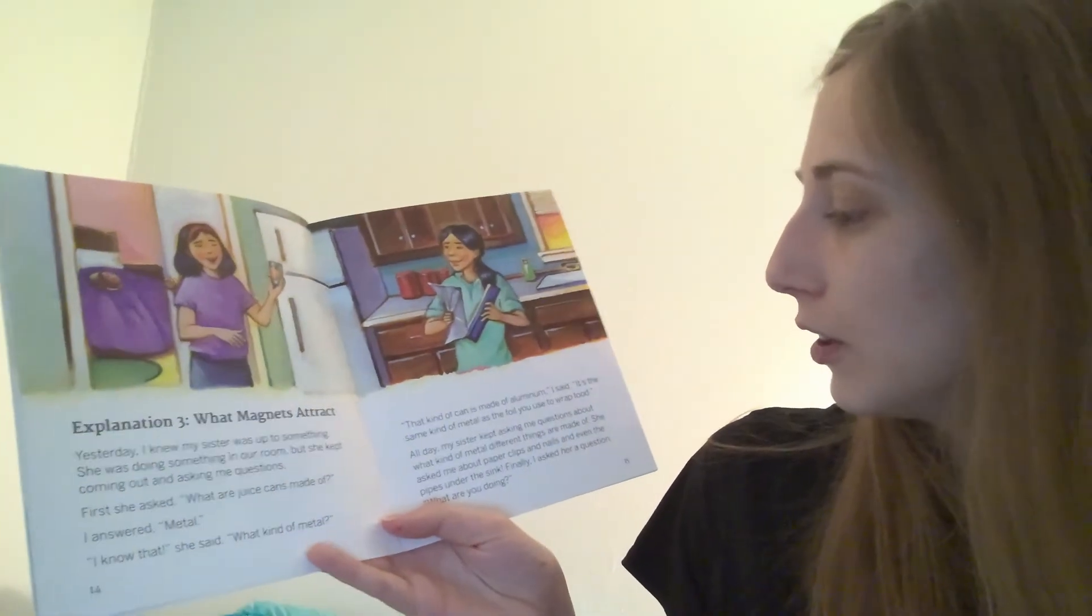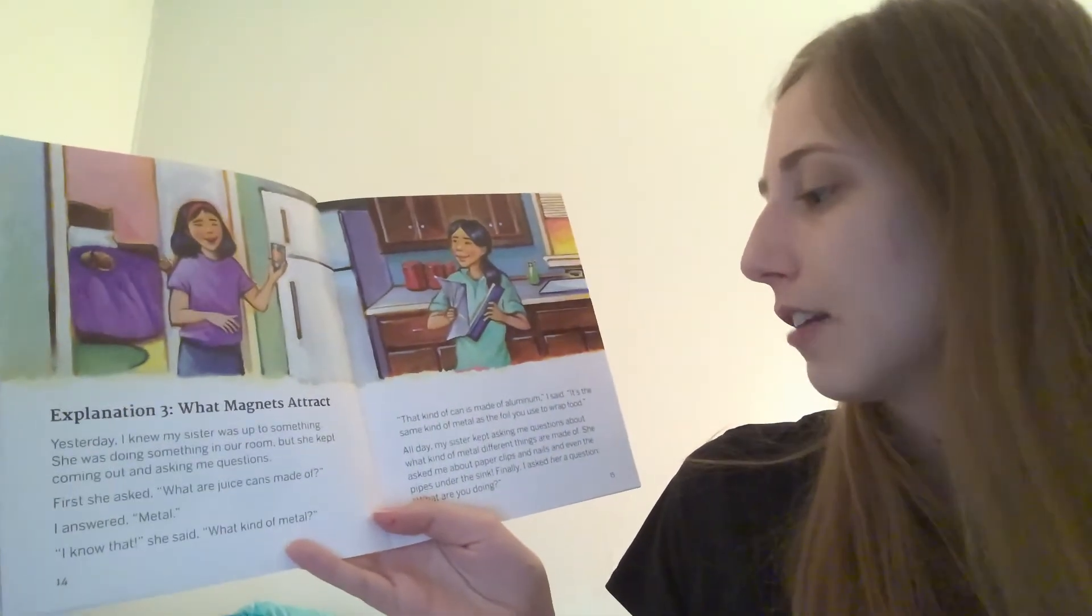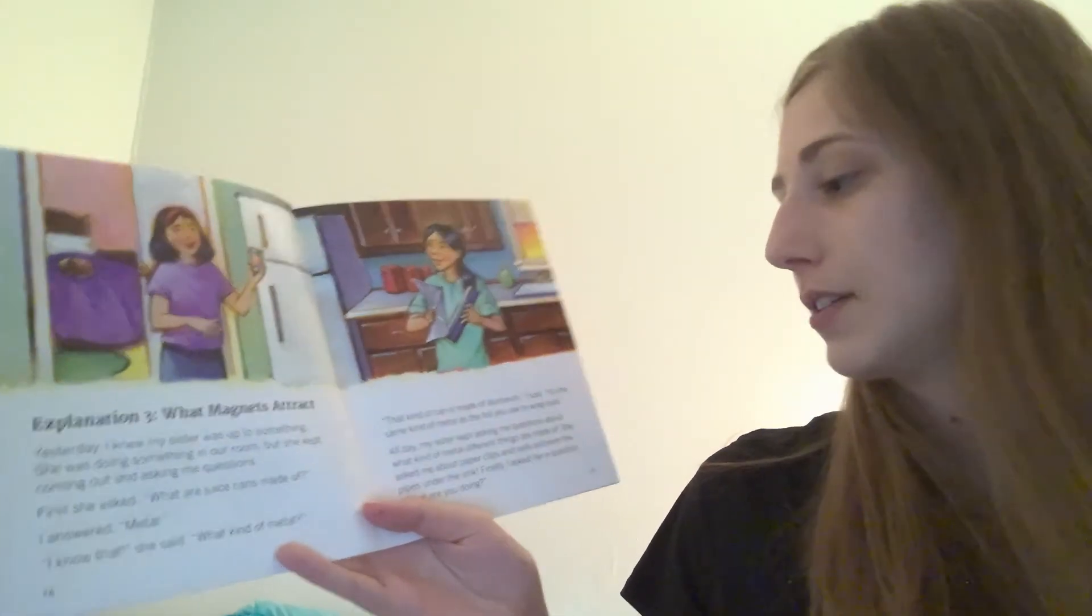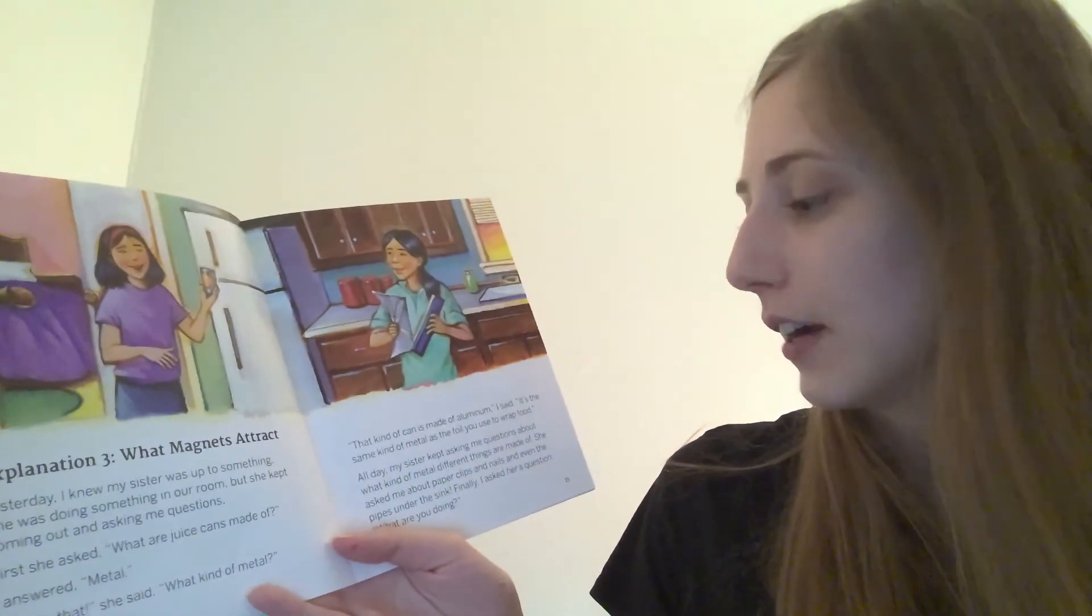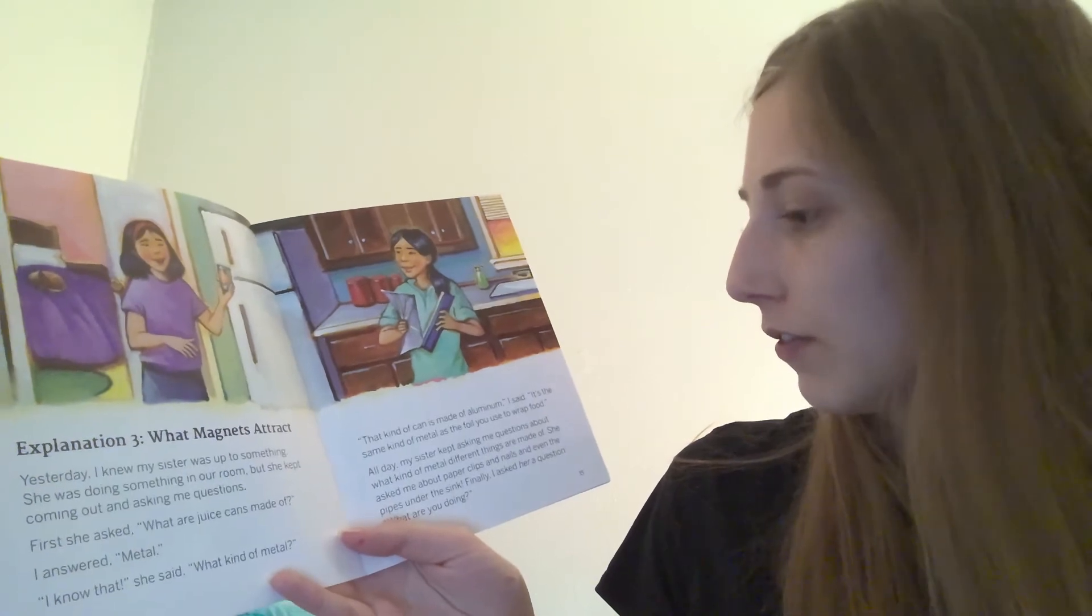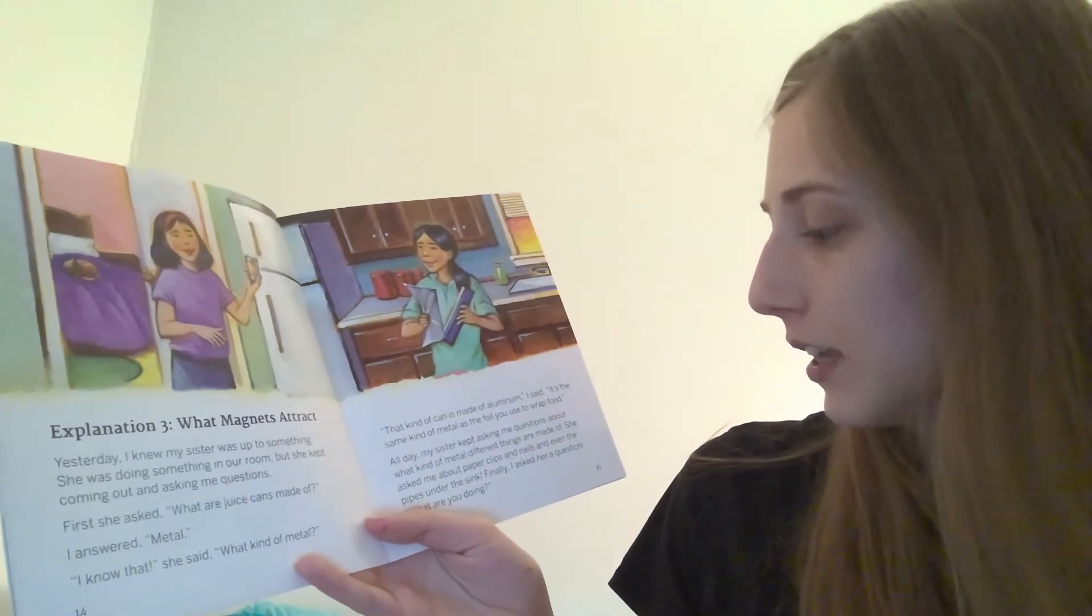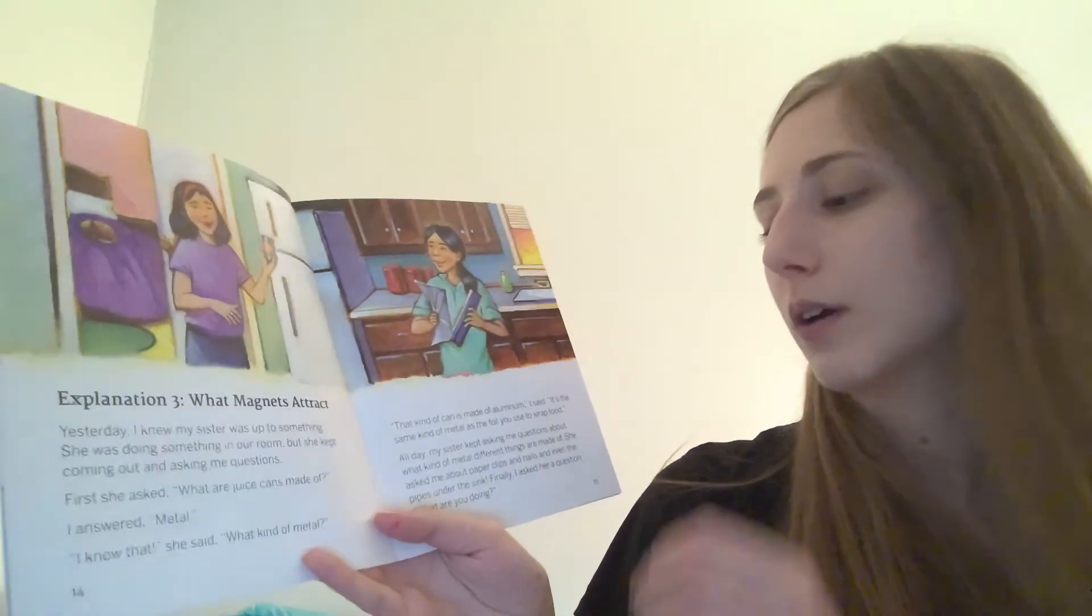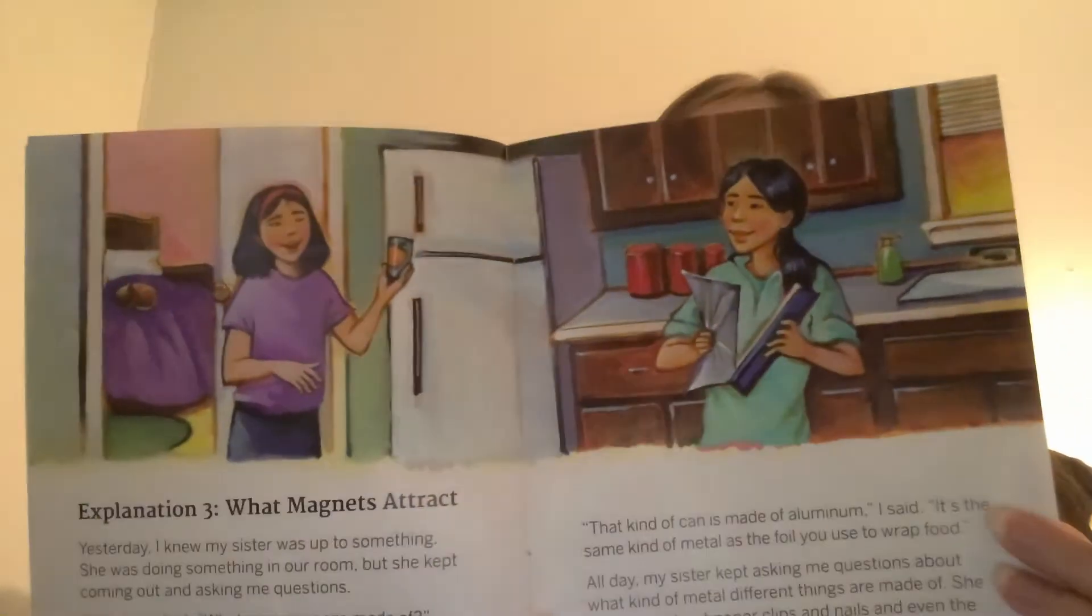That kind of can is made of aluminum, I said. It's the same kind of metal as the foil you use to wrap food. All day, my sister kept asking me questions about what kind of metal different things are made of. She asked me about paper clips and nails and even the pipes under the sink. Finally, I asked her a question. What are you doing?